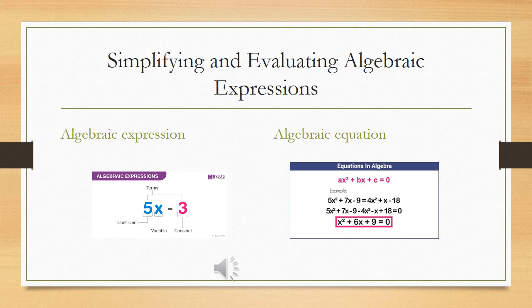Class, simplifying and evaluating algebraic expressions. First of all, we need to understand what is the difference between algebraic expression and algebraic equation. In algebraic expression, there is a coefficient, variable, and constant that is called a term. But in algebraic equation, the term should be balanced with the other term. That is why we need the equal to sign. We are balancing the equation. This is a major difference between algebraic expression and algebraic equation.